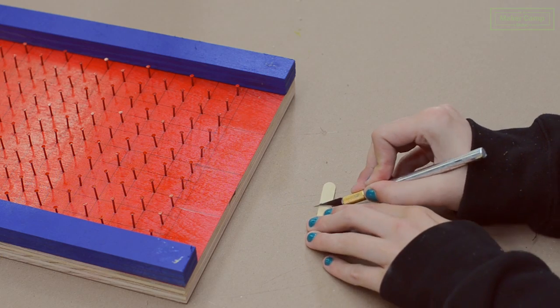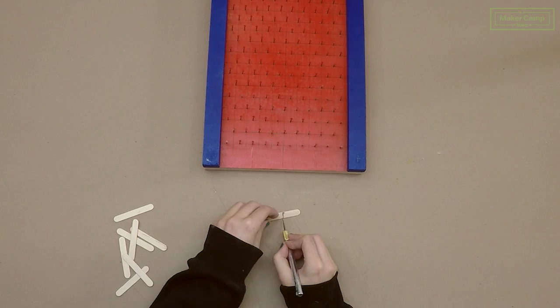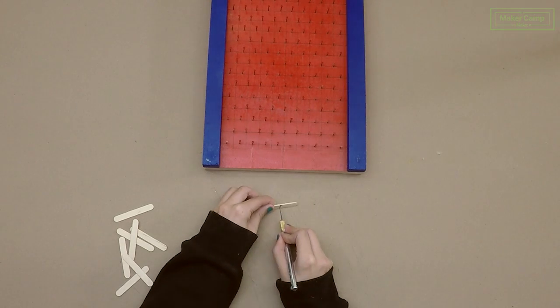You don't have to cut the popsicle stick all the way through. Just score it for the most part three or four times and then you should just be able to snap it right in half.